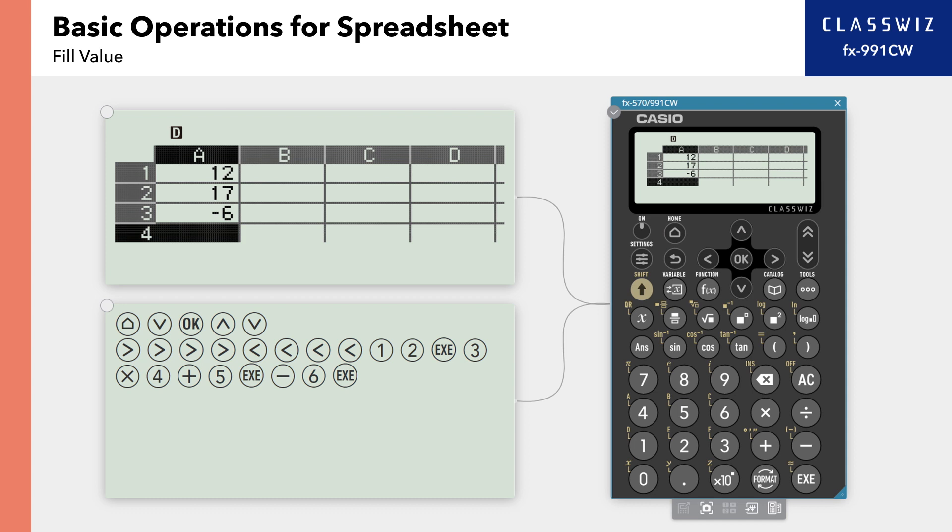Next, let's enter the same value in multiple cells at once. Move from cell A3 to cell B1. In this example, let's enter the number 7 in cells B1, B2, and B3.